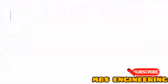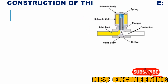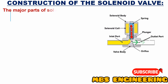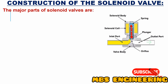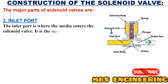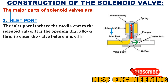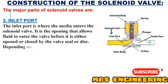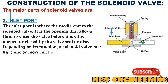The third part of the solenoid valve is the inlet port. The inlet port is where the media enters the solenoid valve. It is the opening that allows fluid to enter the valve before it is either opened or closed by the valve seal or disc. Depending on its function, a solenoid valve may have one or more inlet ports.